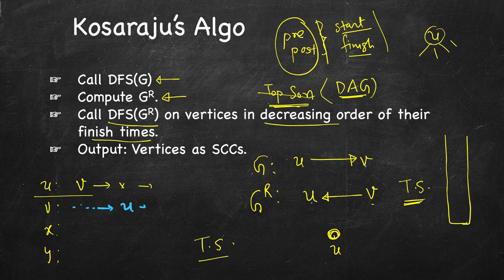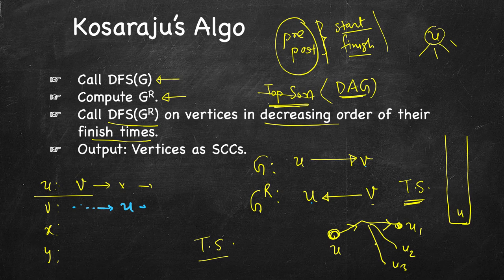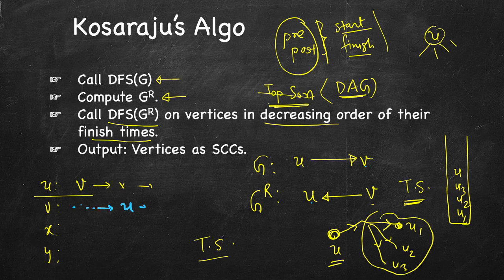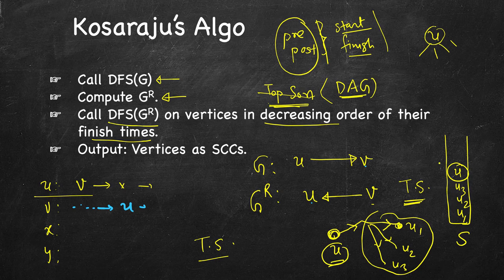When we start DFS from a node u and reach other nodes, those neighbor nodes' DFS will finish first. They get inserted into the stack first — u1, u2, u3 — and only after we are done with DFS on all neighbors do we push u onto the stack. So u comes to the top, meaning its finish time is greater than all its neighbors. When popping from the stack, u will be popped first since its finish time is highest.